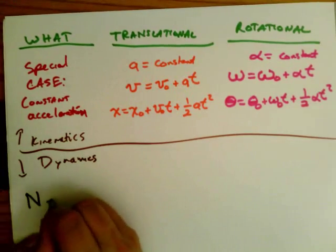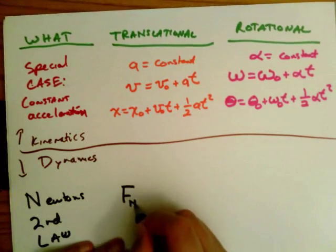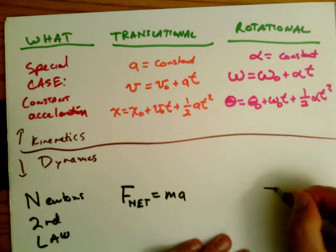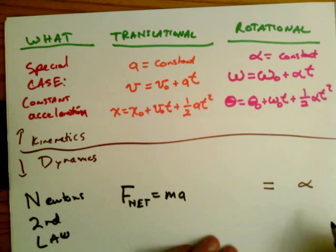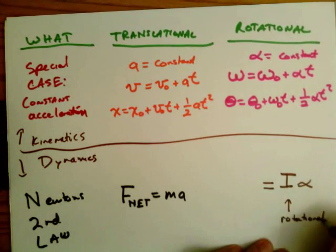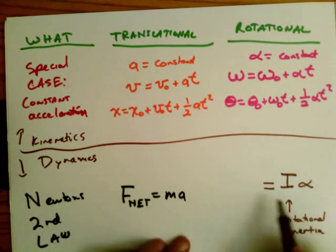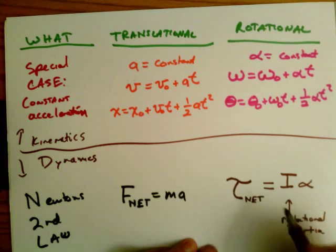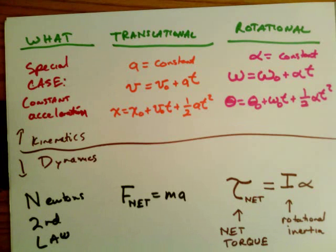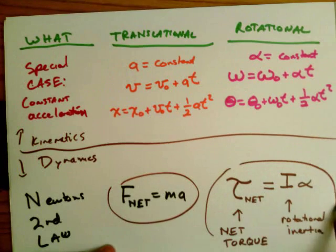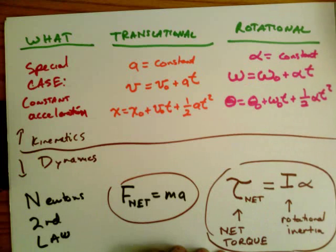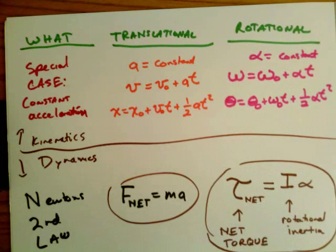What about dynamics? The key for dynamics is Newton's second law: F_net = ma. What is the analog for rotations? We have a analogous to alpha, and we introduce a new quantity I — the rotational inertia, sometimes called the moment of inertia — and tau, the net torque, as the analog of force. This gives us the equation τ_net = Iα, which is the rotational analog of Newton's second law, the angular form of Newton's second law. We will take a good look at that next week.